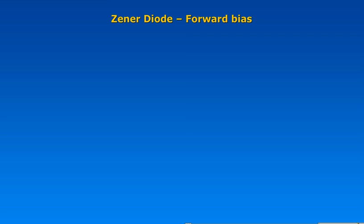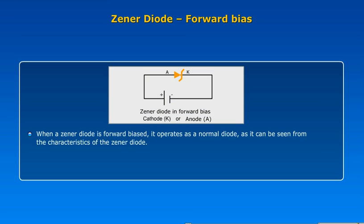Zener diode, forward bias. When a Zener diode is forward biased, it operates as a normal diode as it can be seen from the characteristics of the Zener diode.